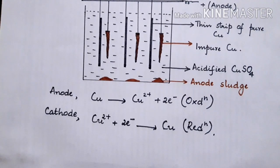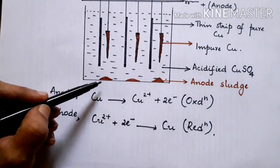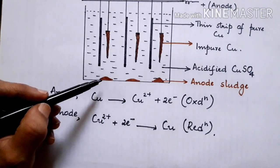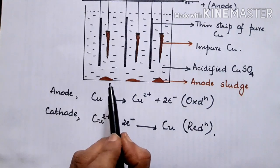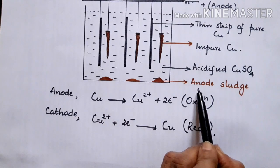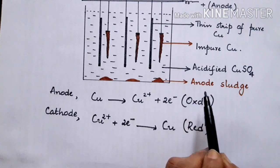Thus, we get pure copper from impure copper at the cathode. You find that whatever impurities are present, that will be deposited under each and every anode and that product is known as anode sludge or anode mud.